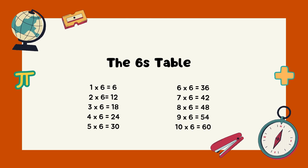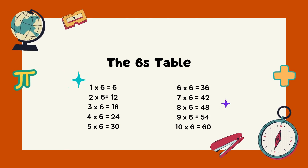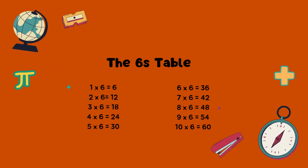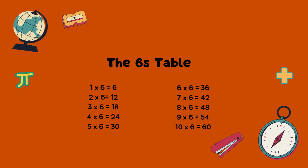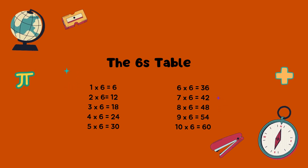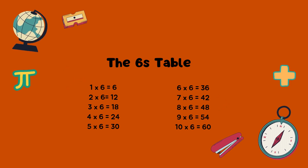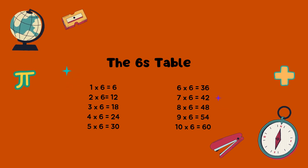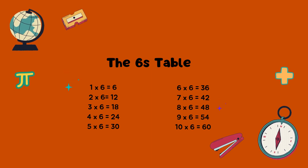The sixes table. One times six equals six. Two times six equals twelve. Three times six equals eighteen. Four times six equals twenty-four. Five times six equals thirty.